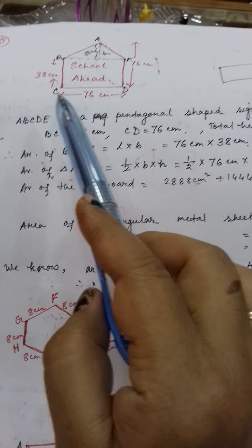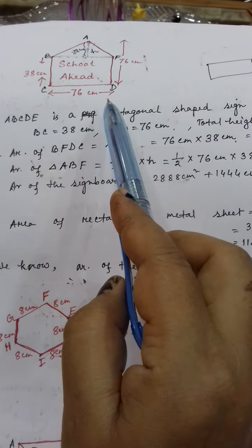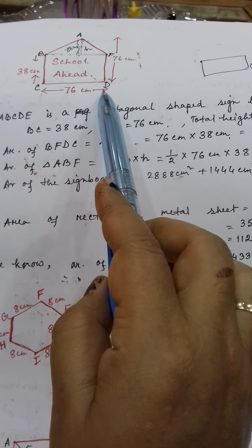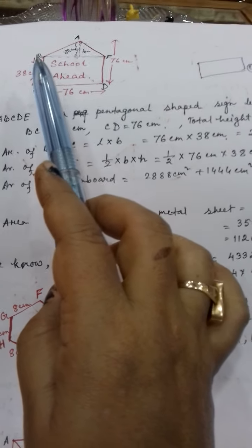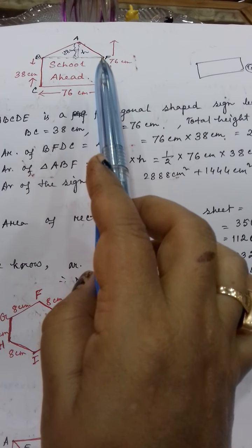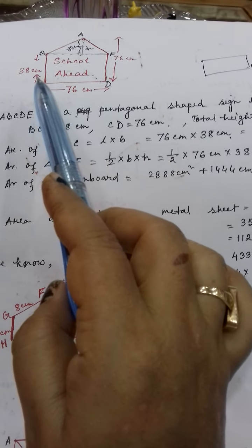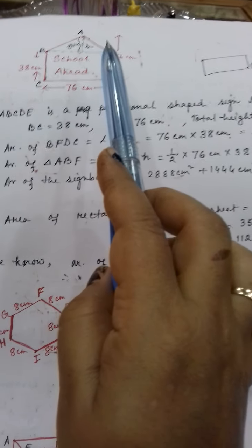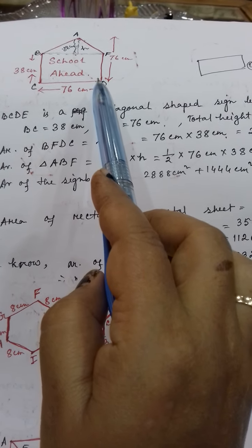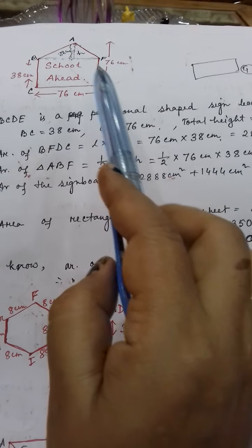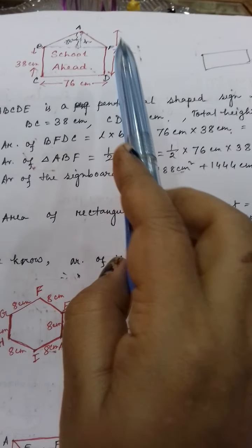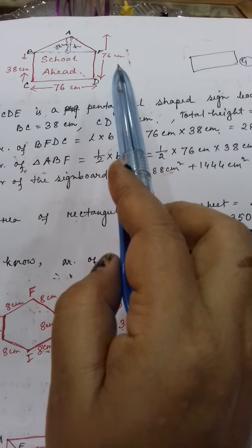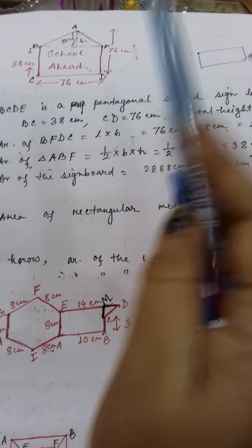Now here the measurements are given. CD is 76 cm, so if CD is 76 then automatically BF will also be 76. And BC is given as 38 cm, so FD is also 38 cm. The total height of this pentagonal figure is given as 76 cm.